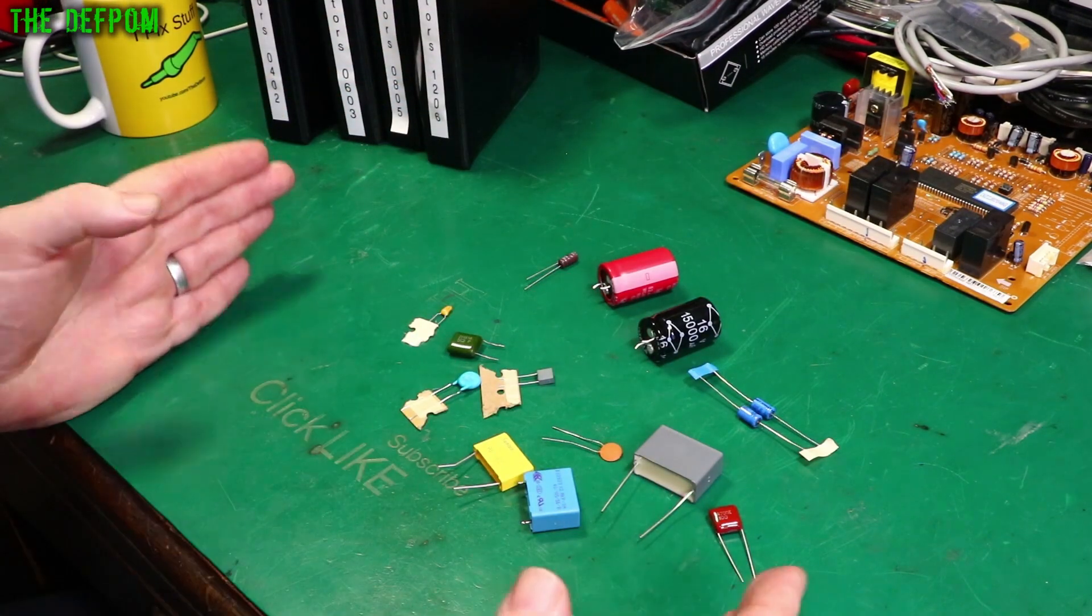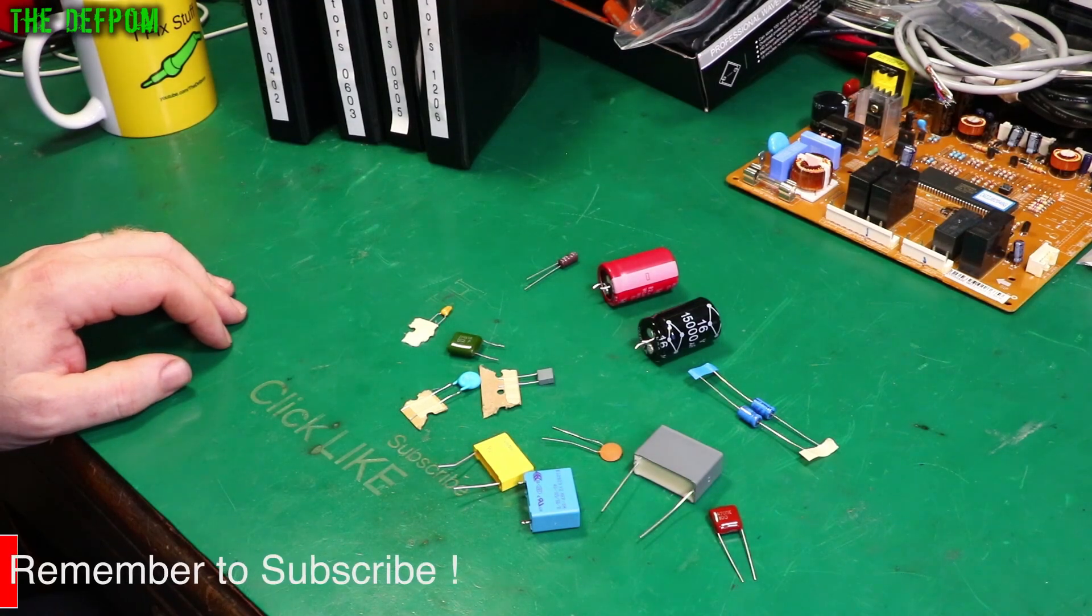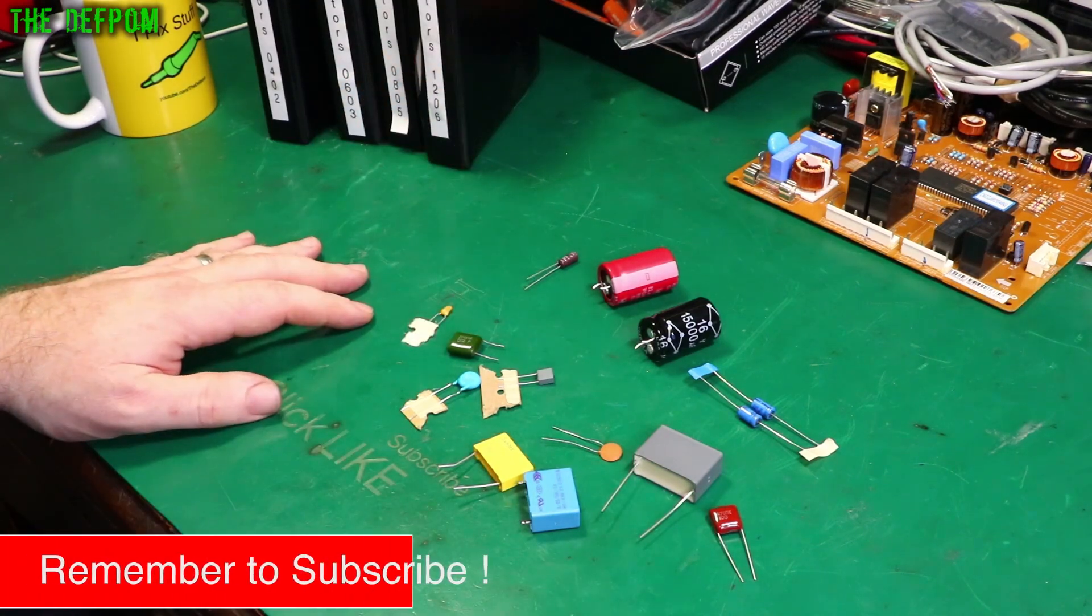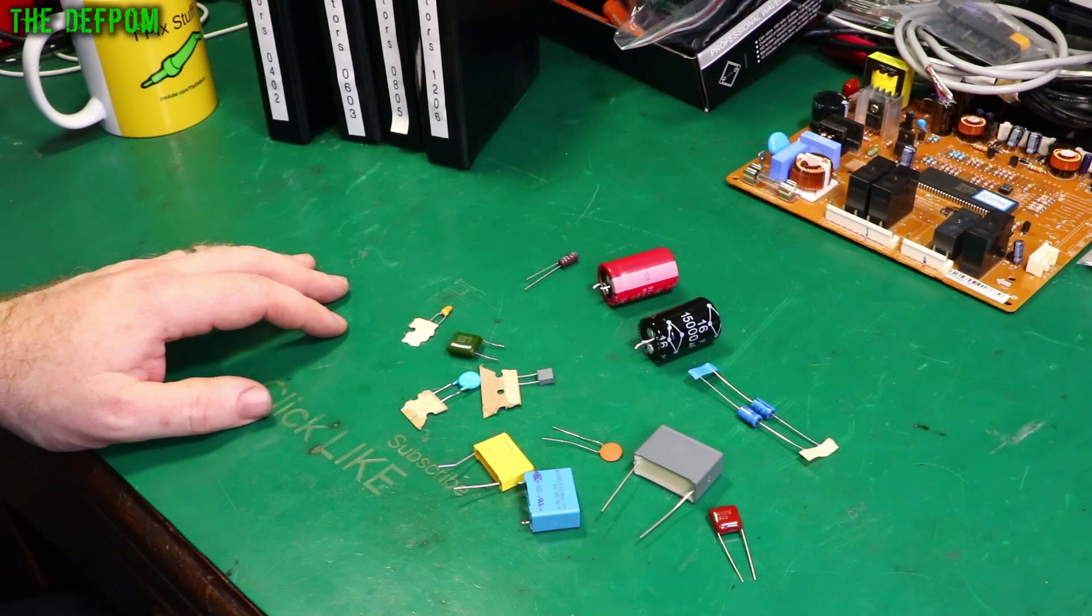I might get into that later on. Capacitors and inductors can be used to change that phase shift in an AC system. But that's beyond what I'm covering now. I'll sort of throw that in there, make you interested.